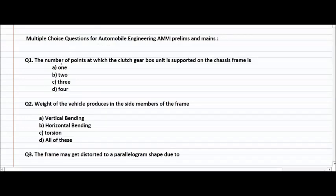Question number one: the number of points at which the clutch gearbox unit is supported on the chassis frame is three. The three points at which the clutch gearbox unit is in contact with the chassis frame.